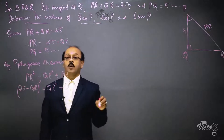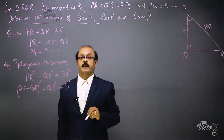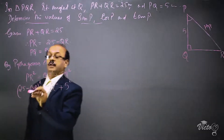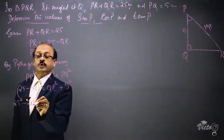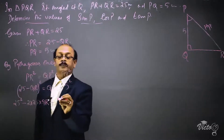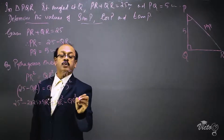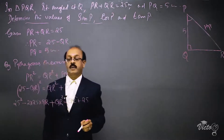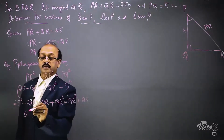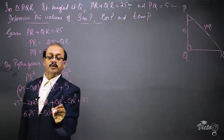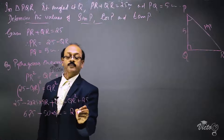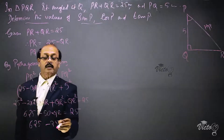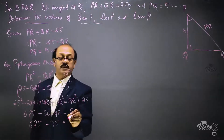Expanding (25 minus QR) whole squared using the identity (A minus B) whole squared equals A squared minus 2AB plus B squared, we get: 625 minus 2 times 25 times QR plus QR squared equals QR squared plus 25. The QR squared terms on both sides cancel. Bringing 25 to the left side gives 625 minus 25, and taking minus 50 QR to the right side gives plus 50 QR.